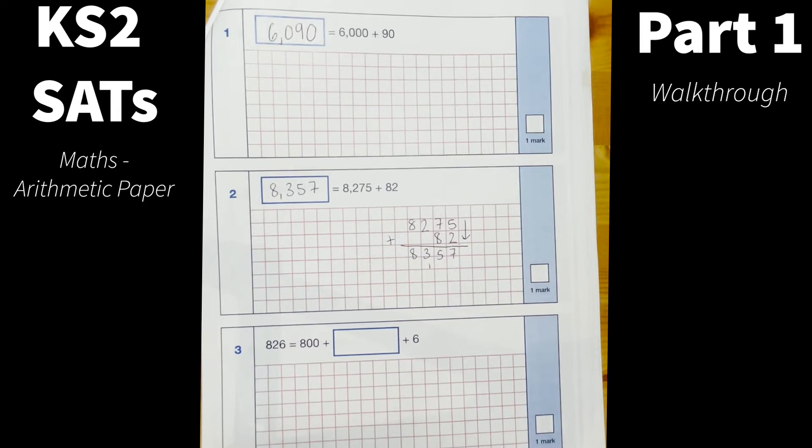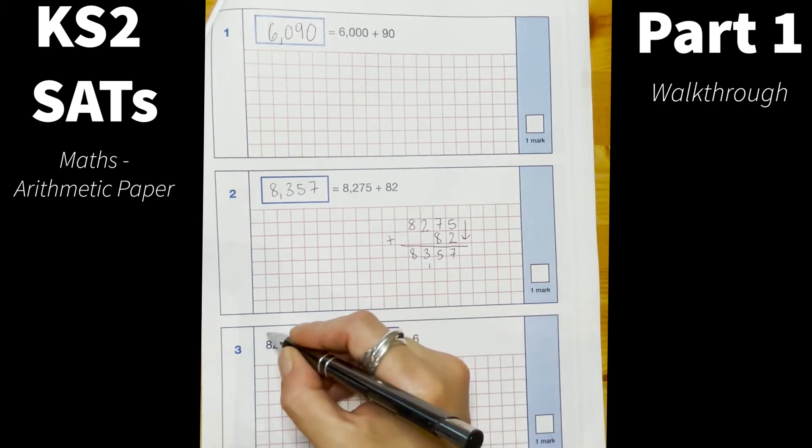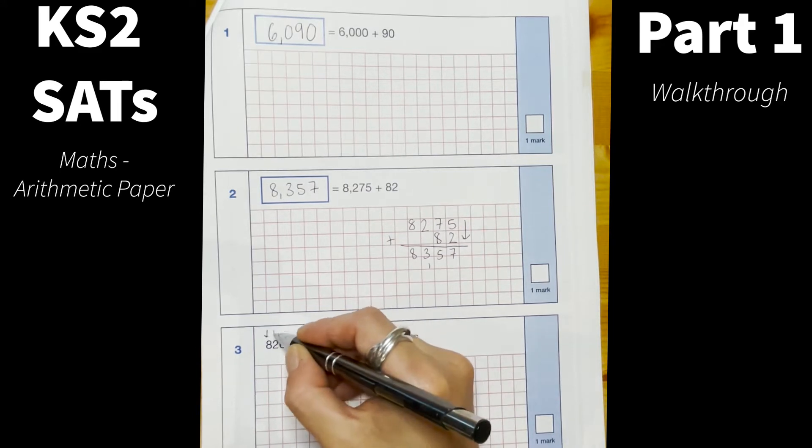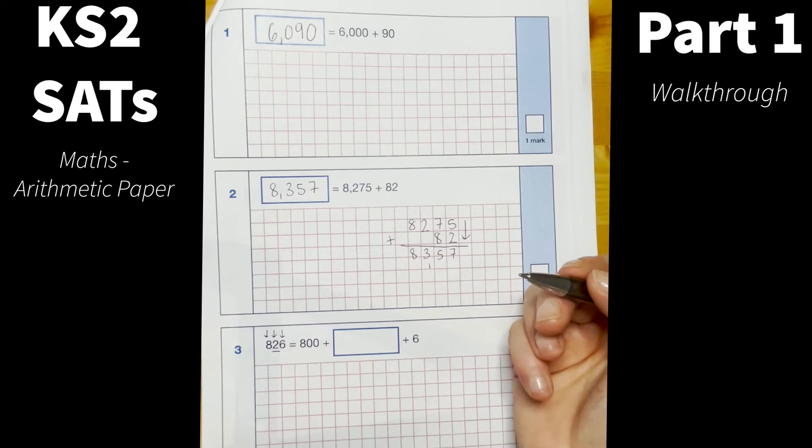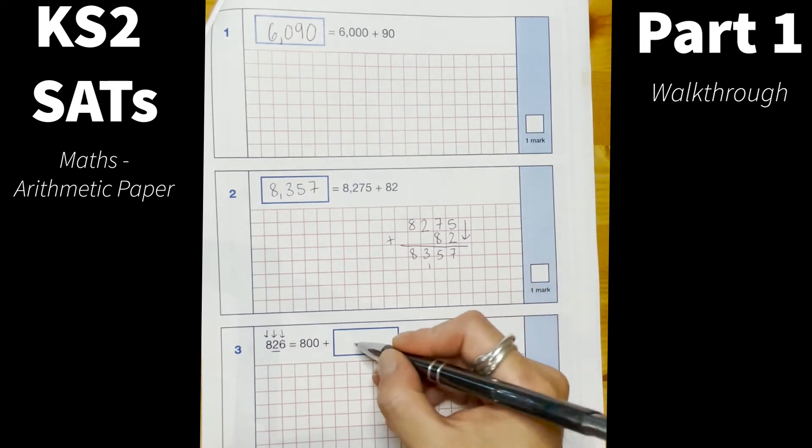Number three, 826 equals 800 add something equals 6. Again this is testing place value and the children should be able to recognize that I have my hundreds column, my tens and my ones and I am looking at the value of that digit there and that is 20.